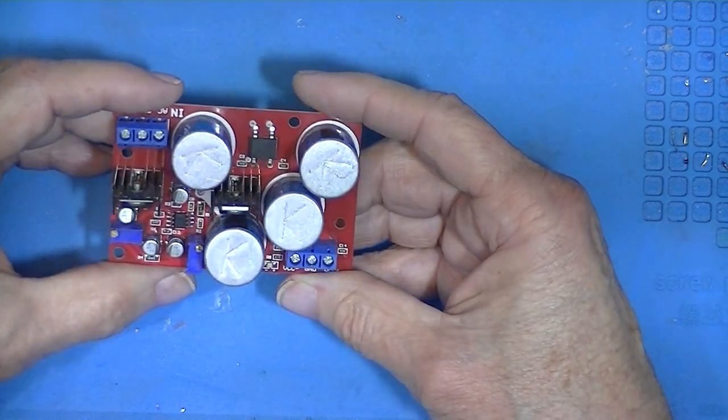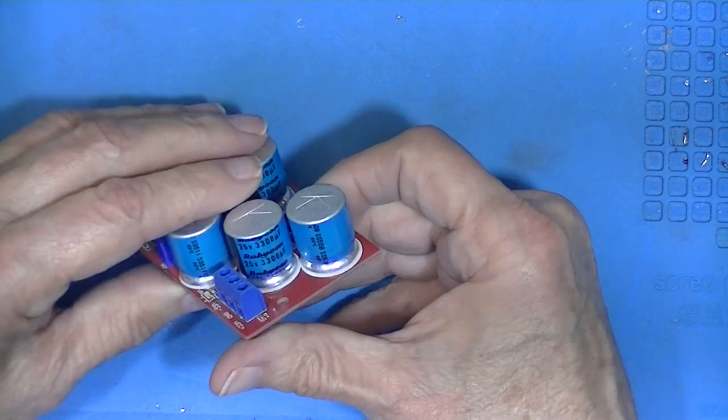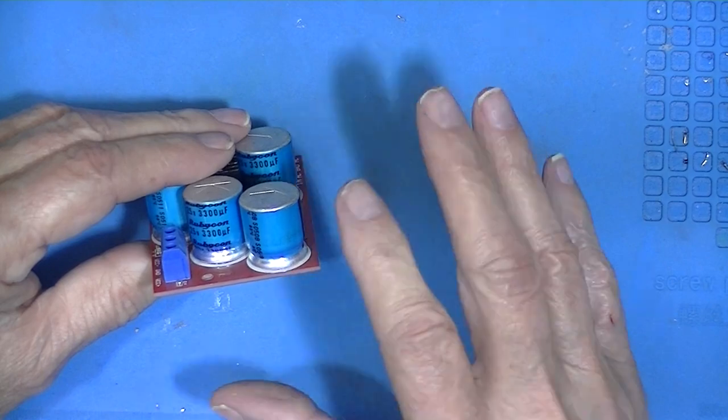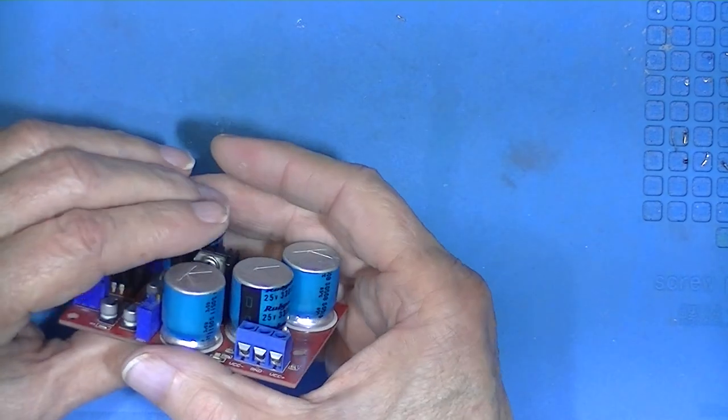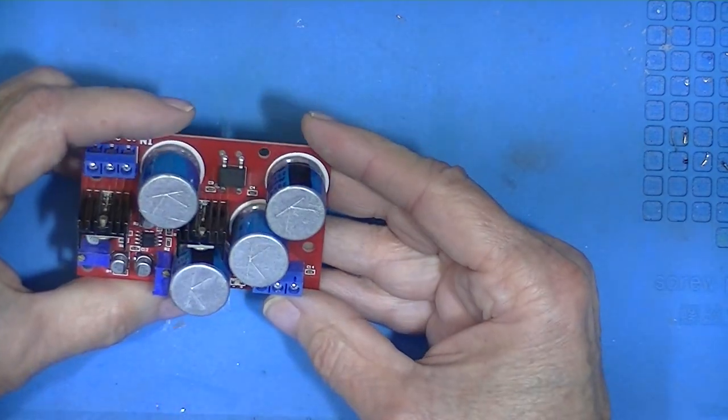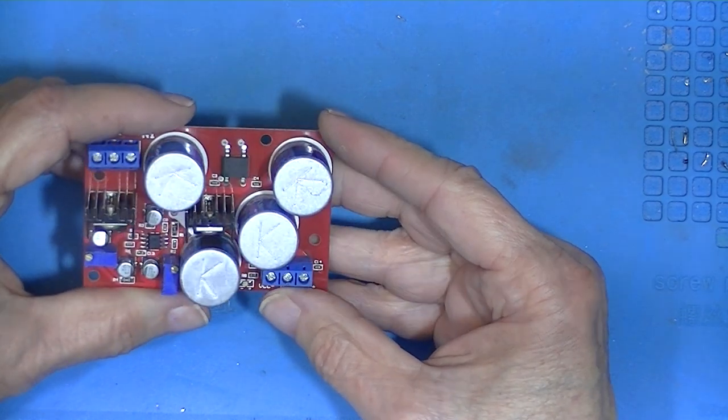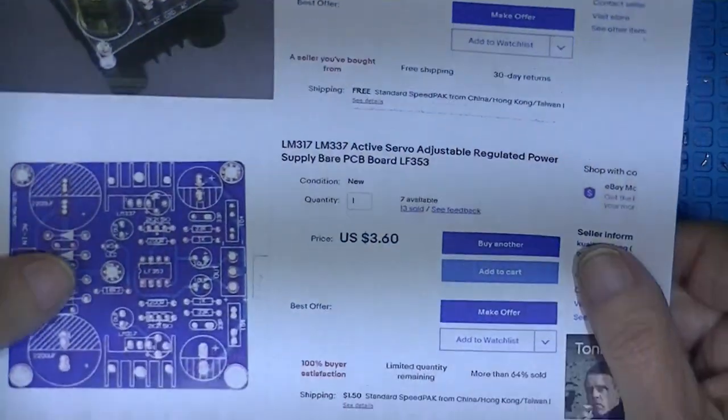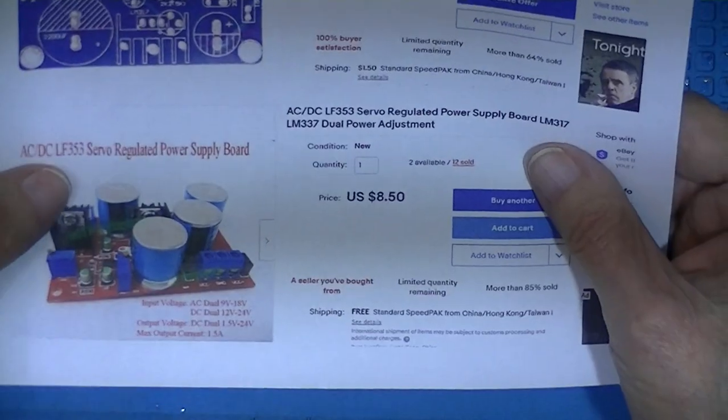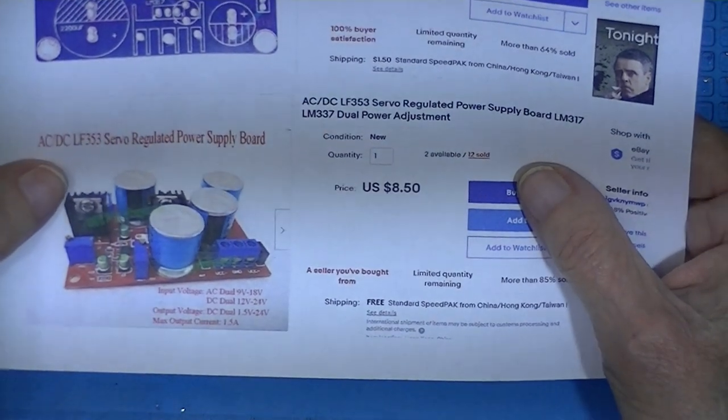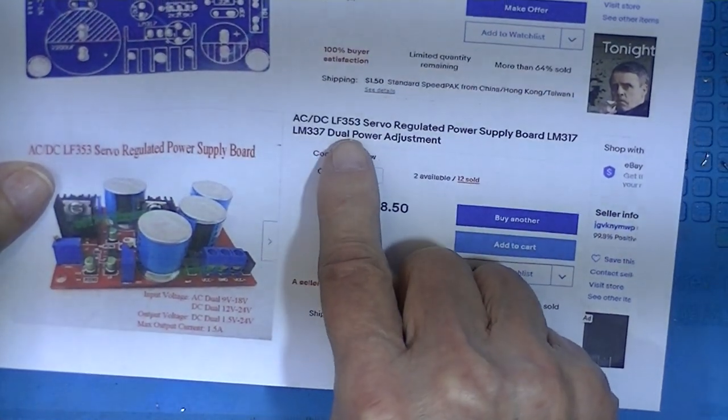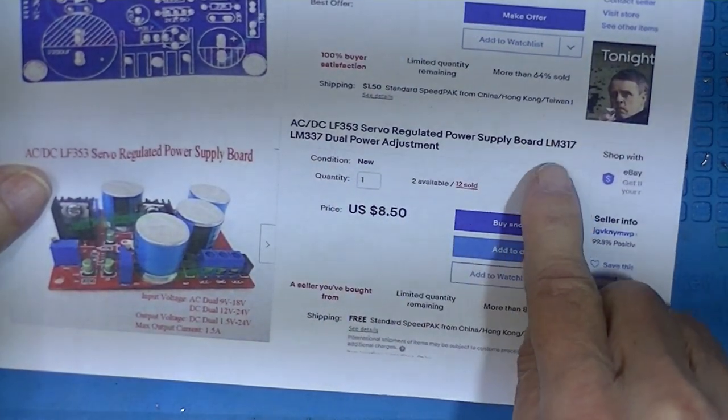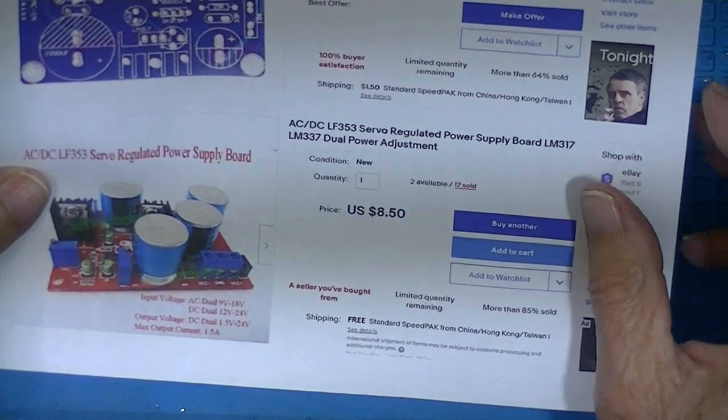This is another iteration of the dual output positive negative output servo supply. So this was the first one, this is a bare board, and this is the one I have now. It's an LF353 servo regulated power supply board with the 317 and a 337.